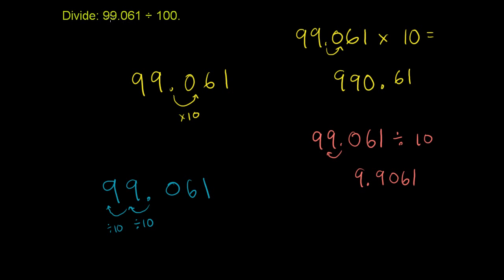So 99.061 divided by 100 is going to be equal to 0.99061. We're just going to shift the decimal to the left by 2, and we might want to put a leading 0 here, just so it makes it a little bit easier to read.